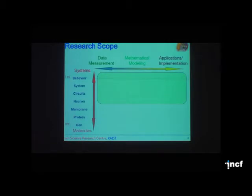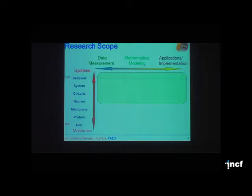Stan talked about several different levels of neuroscience from gene to behavior. The area we are interested in is at the functional level — we don't want to go down to the neuron level. We are interested in functions, and we have data measurement, modeling, and application all together. We also have neurobiology researchers in Korea, but they are not interested in mathematical modeling, so I'll skip that part.